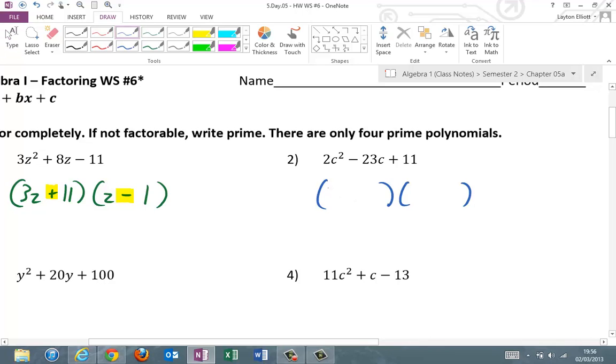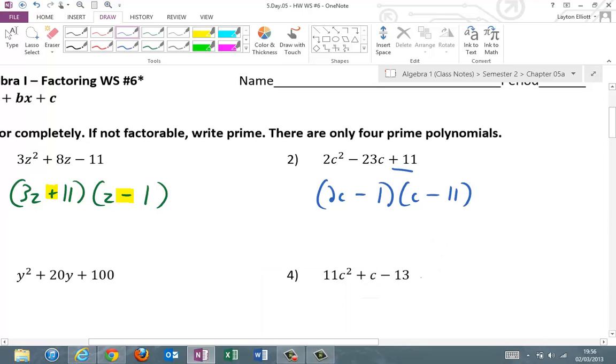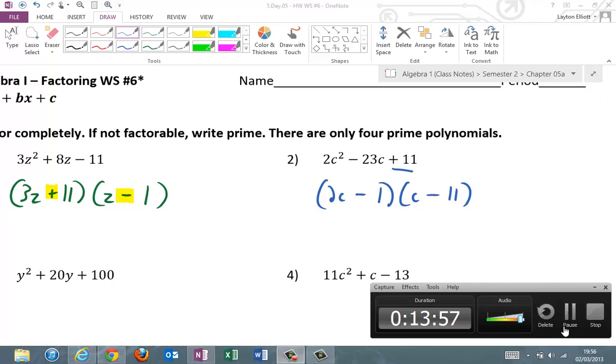Okay, next one. No greatest common factor. So, we know that 2c² is going to end up being 2c and c. The 11 is going to be 1 and 11 again. So, this time, we do want to get to a larger middle number. So, I'm going to put the 11 with the 2 to get to 22, and the 1 there to get from 22 to 23. A positive sign on the 11 means that they have to be the same sign. With a minus in the middle, they're going to be minus, minus. 2c² - 22c - c + 11 give us this whole thing. So, I'm going to stop there and let you finish the rest of this. You're going to get this worksheet tomorrow, too, so you don't have it yet.